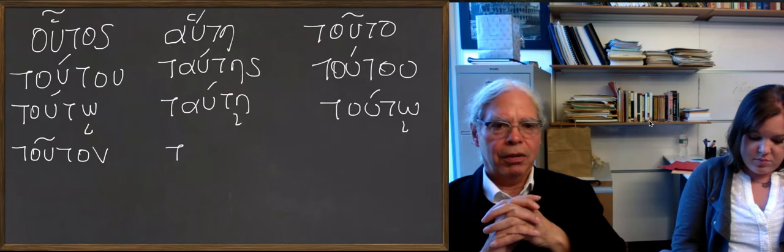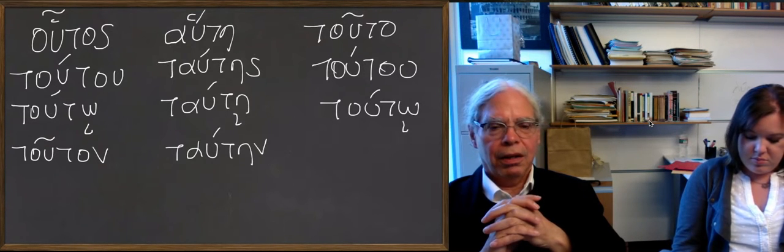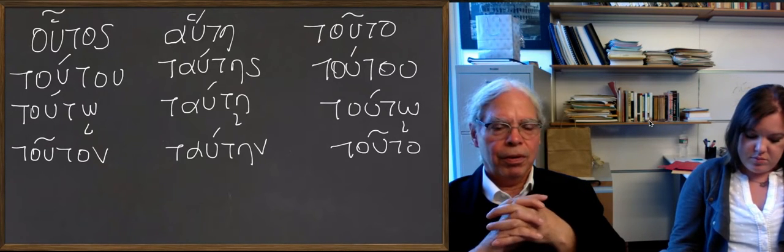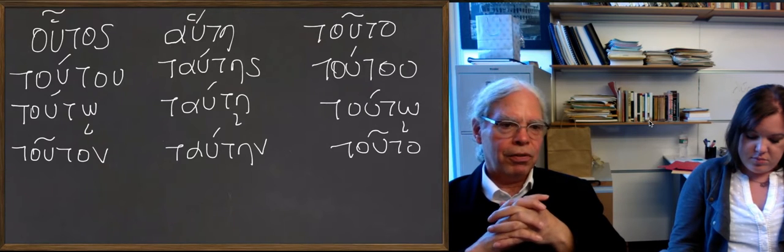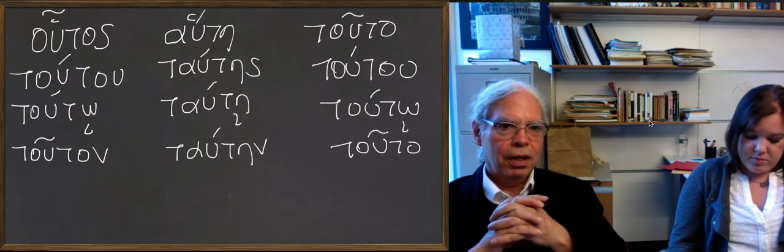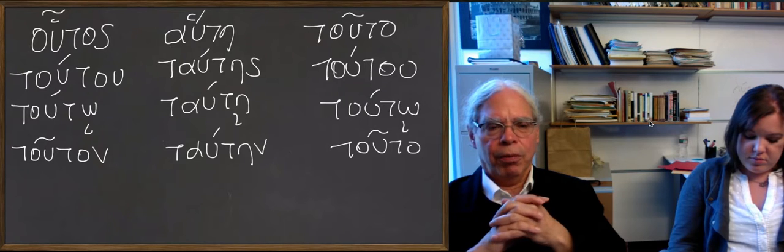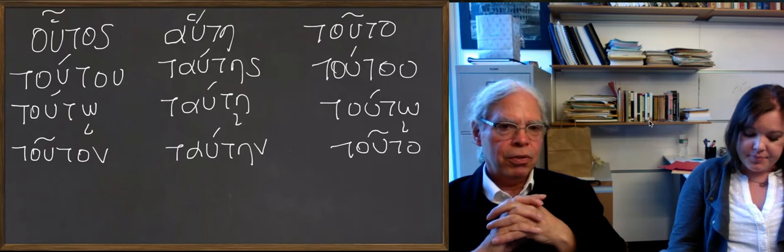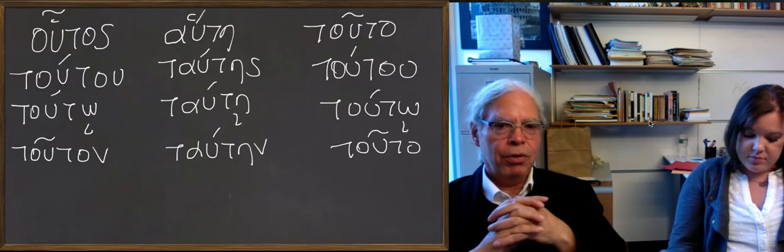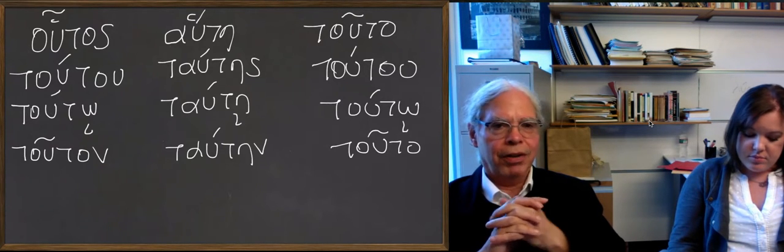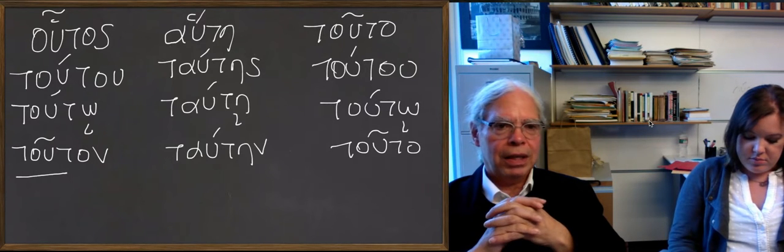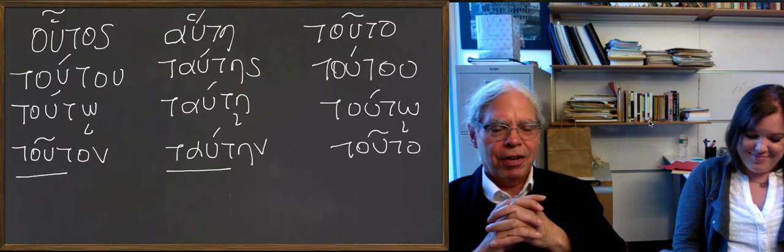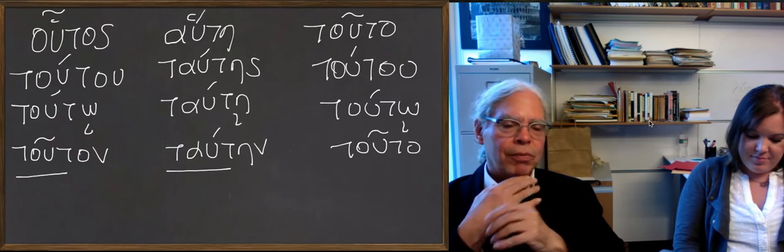The accusative singular is touton, yeah, circumflex. Tautēn, okay. And touto again. So it looks as though what we're looking at, if you just looked at this one, you'd say, okay, aside from the h's in the nominative singular masculine and feminine, it looks like the root for the masculine is tou, and the root for the masculine neuter is tout rather, and the root for the feminine is taut. Okay? Huh. It doesn't work. Okay?